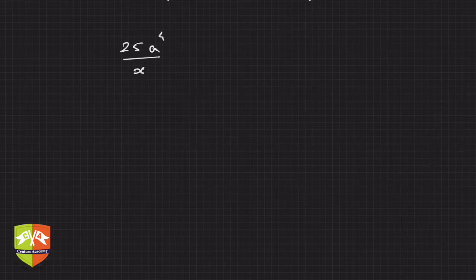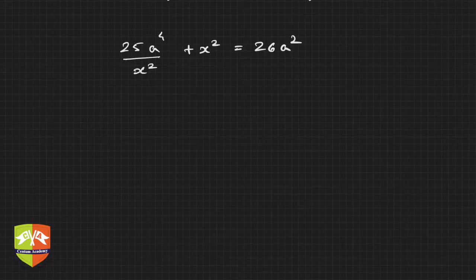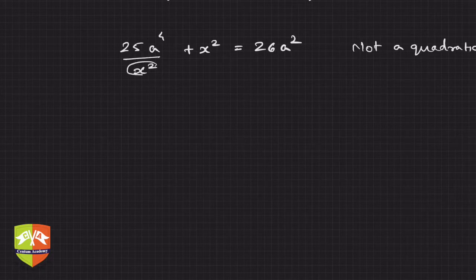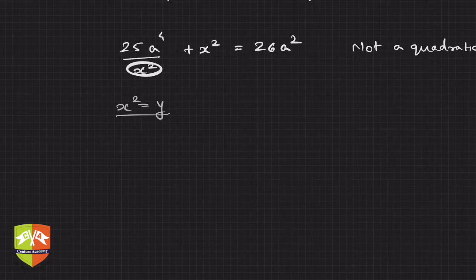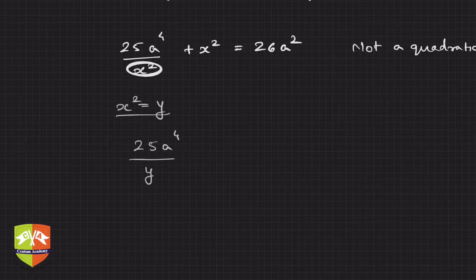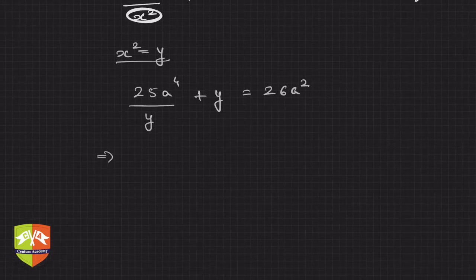Clearly, this is not a quadratic equation because x squared appears in the denominator. But can it be reduced to quadratic form? Yes. Let me again take x squared as y. The equation becomes 25a to the power 4 divided by y plus y equals 26a squared. Taking a common denominator on the left side: 25a to the power 4 plus y squared, all over y, equals 26a squared.